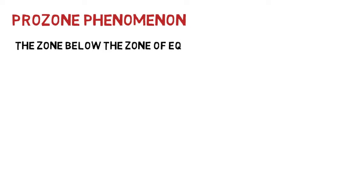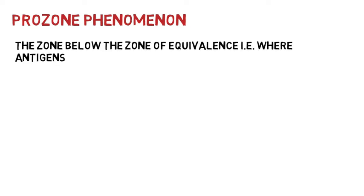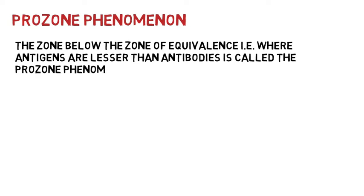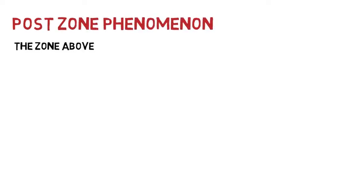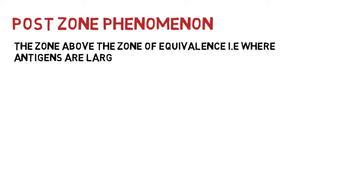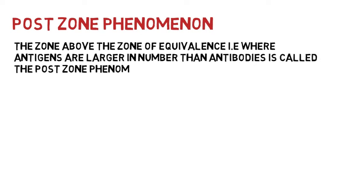A precipitation reaction is interfered with above or below the zone of equivalence due to obstruction in lattice formation. The zone just below the zone of equivalence, where there are fewer antigens and antibodies are in excess, is called the prozone phenomenon. The zone above the zone of equivalence, where antigens are greater in number than antibodies, is called the postzone phenomenon.